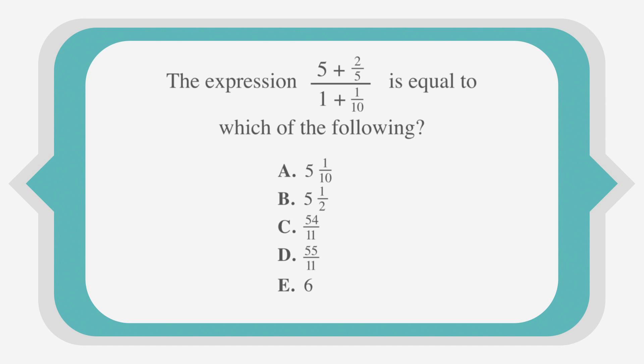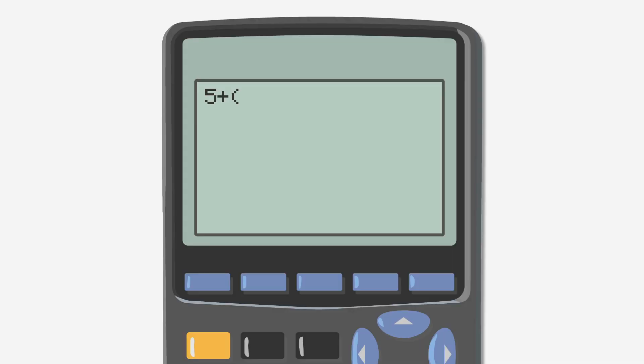We need to plug the equation from the question stem into our calculator to determine its value. Let's start by entering 5 plus 2 fifths. Remember, we need to enter the fraction in parentheses. So, 5 plus parenthesis 2 divided by 5 parenthesis. We get 5.4 for our numerator.